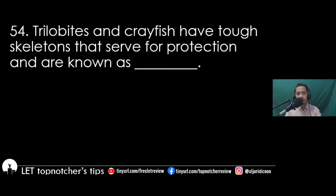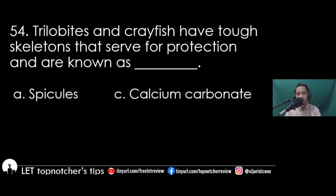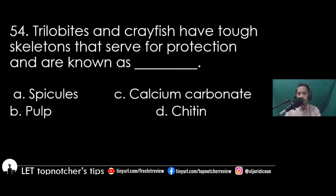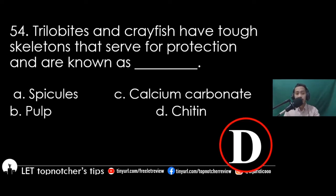Item 54: Trilobites and crayfish have tough skeletons that serve for protection and are known as blank. A) speckles, B) pop, C) calcium carbonate, D) chitin. The best answer is letter D, chitin.